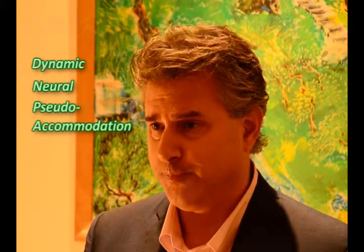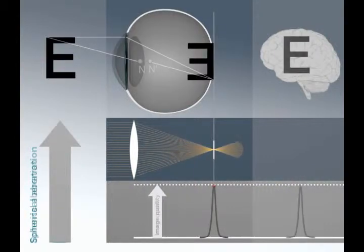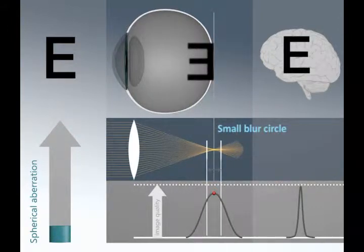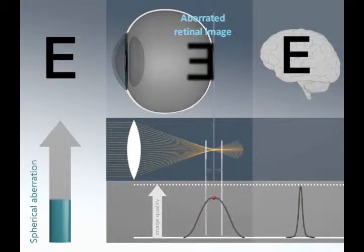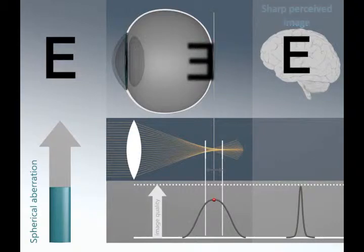Our approach was to utilize the inherent neural processing capability of the human visual cortex to filter spherical aberration as a dynamic neural pseudo-accommodating solution. A small amount of spherical aberration results in rays of light focusing in a small blur circle rather than a single point, meaning that the retinal image will be slightly spherically aberrated. However, due to the natural ability of the visual cortex to process spherical aberration and enhance edge detection, the image in the mind is perceived as a sharp image.